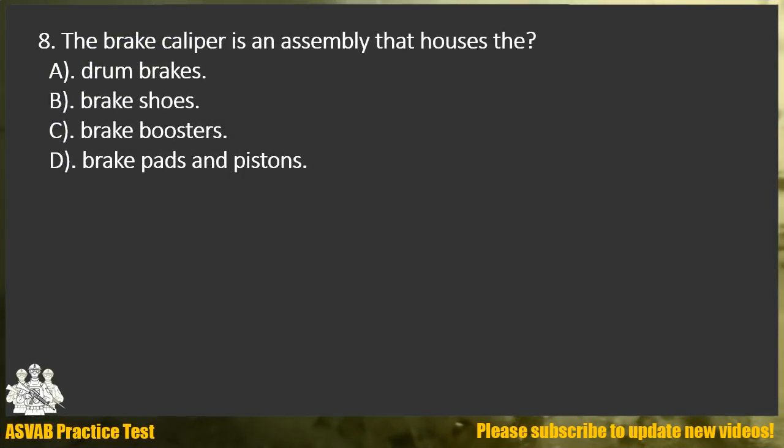Question 8. The brake caliper is an assembly that houses the: A. Drum brakes. B. Brake shoes. C. Brake boosters. D. Brake pads and pistons.